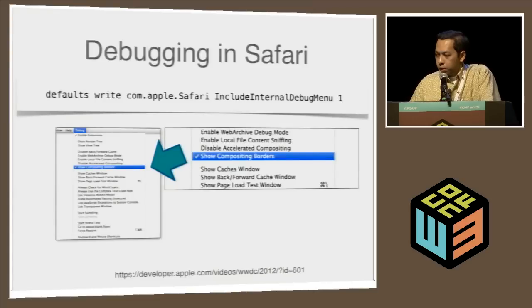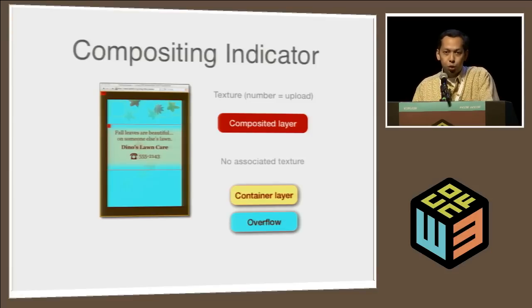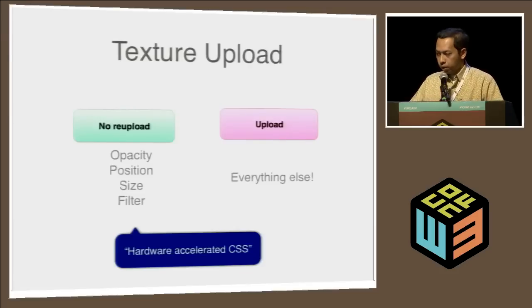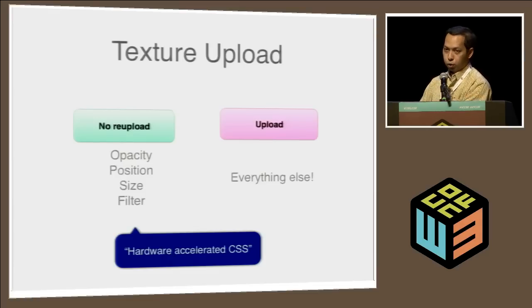Now let's look at some tools and examples. Debugging compositing can be done in Safari — if you run a specific command in your terminal, your Safari gets a magical new debug menu that allows you to toggle compositing borders. The indicator of compositing is depicted in color-coded boxes. What's important is not the color itself but the numbers — the numbers represent texture uploads: how many times the browser needs to recapture your element, put it as a texture, and send it to the GPU. To minimize texture uploads, only animate or transition properties such as opacity, position, size, and filters — these are what people call hardware-accelerated CSS.